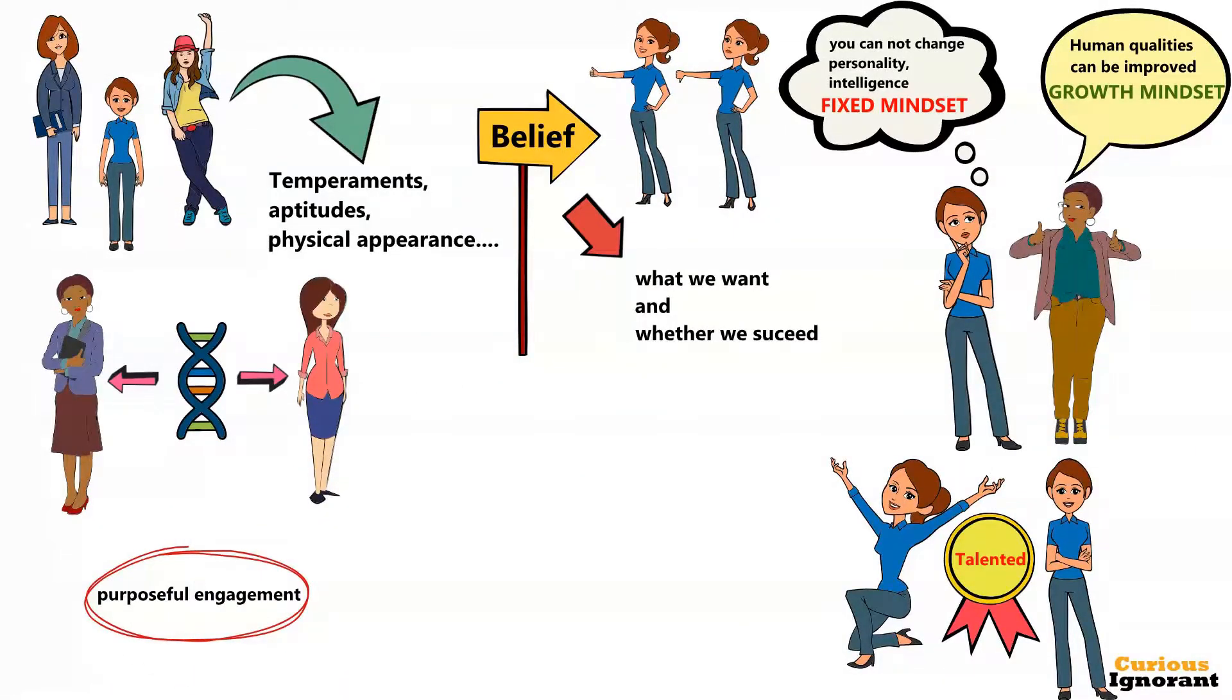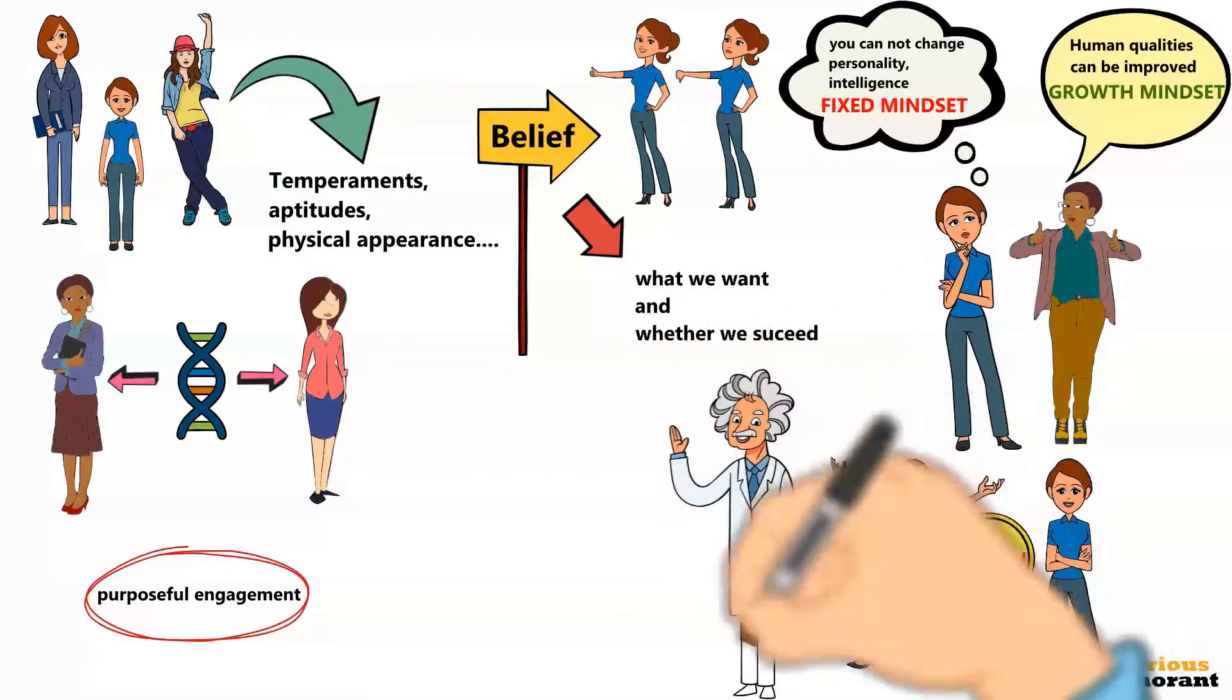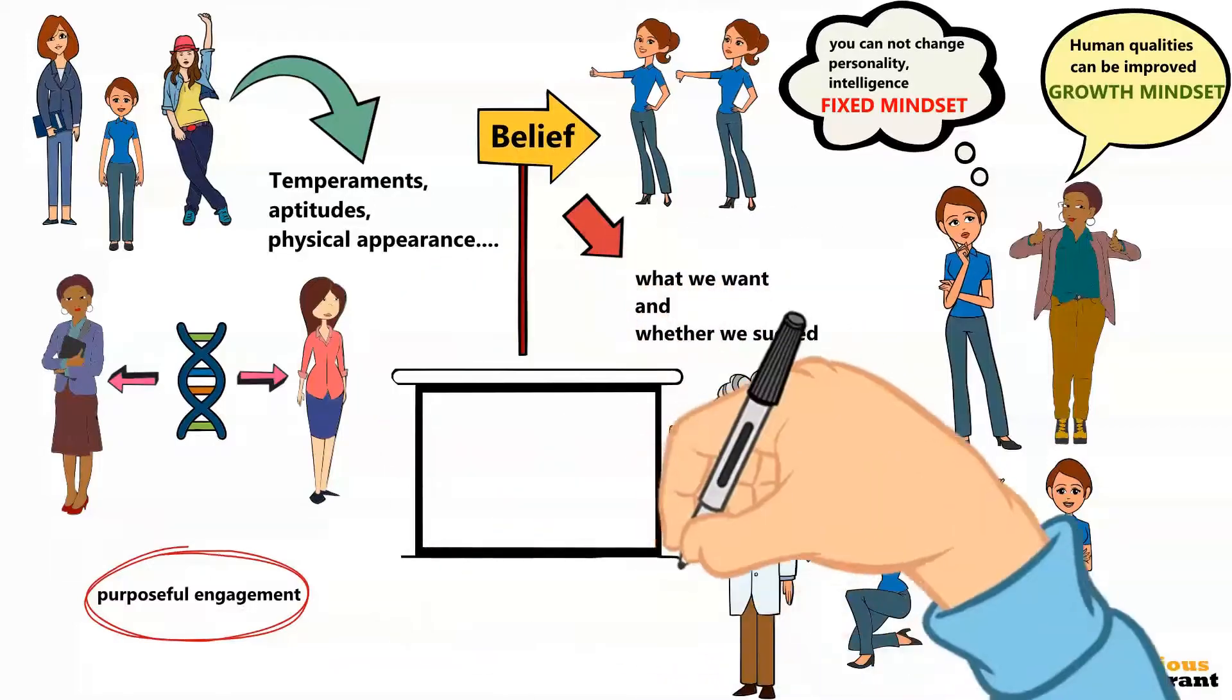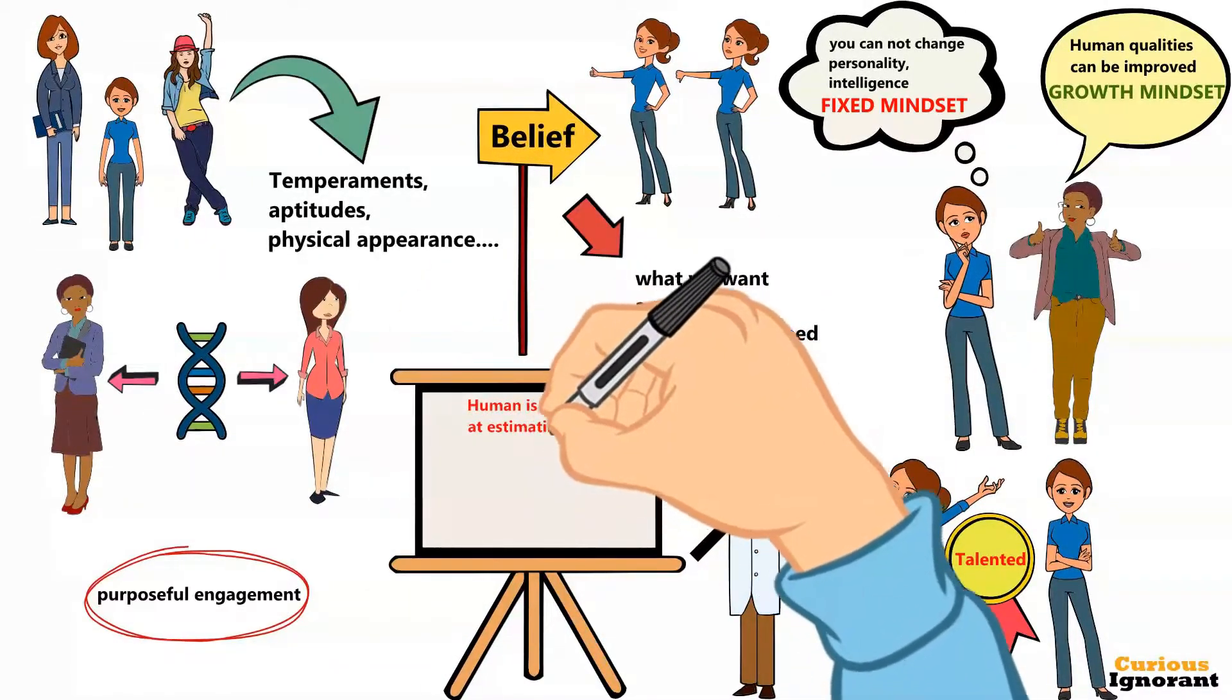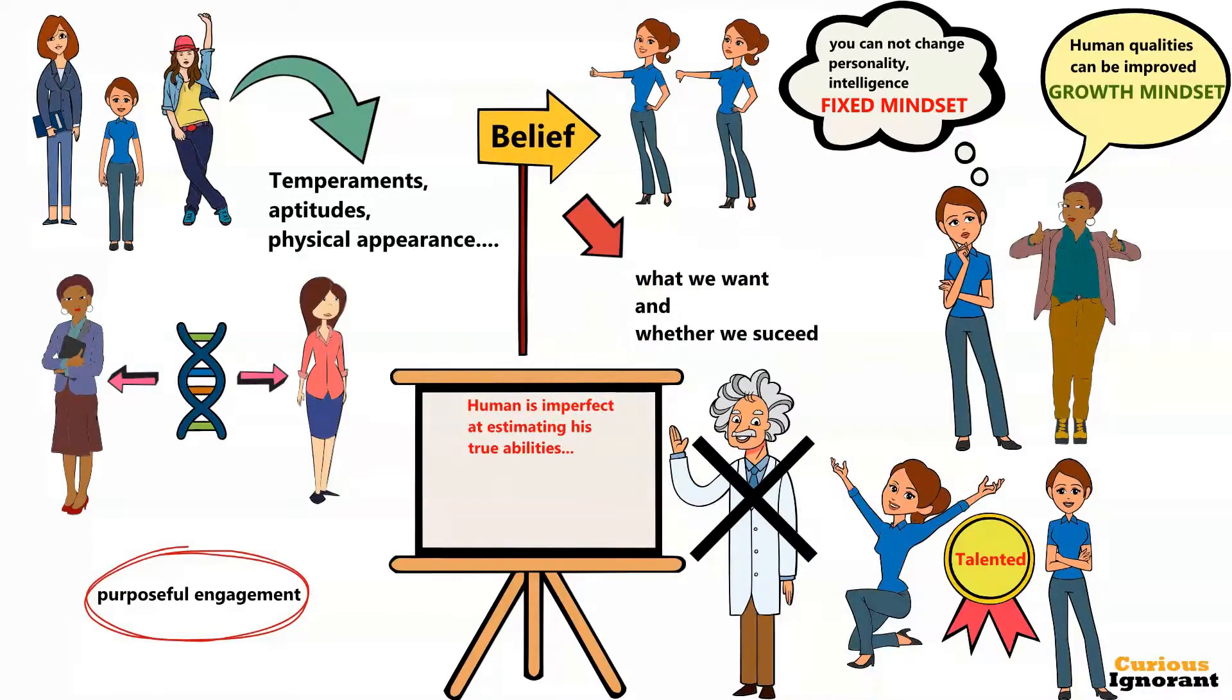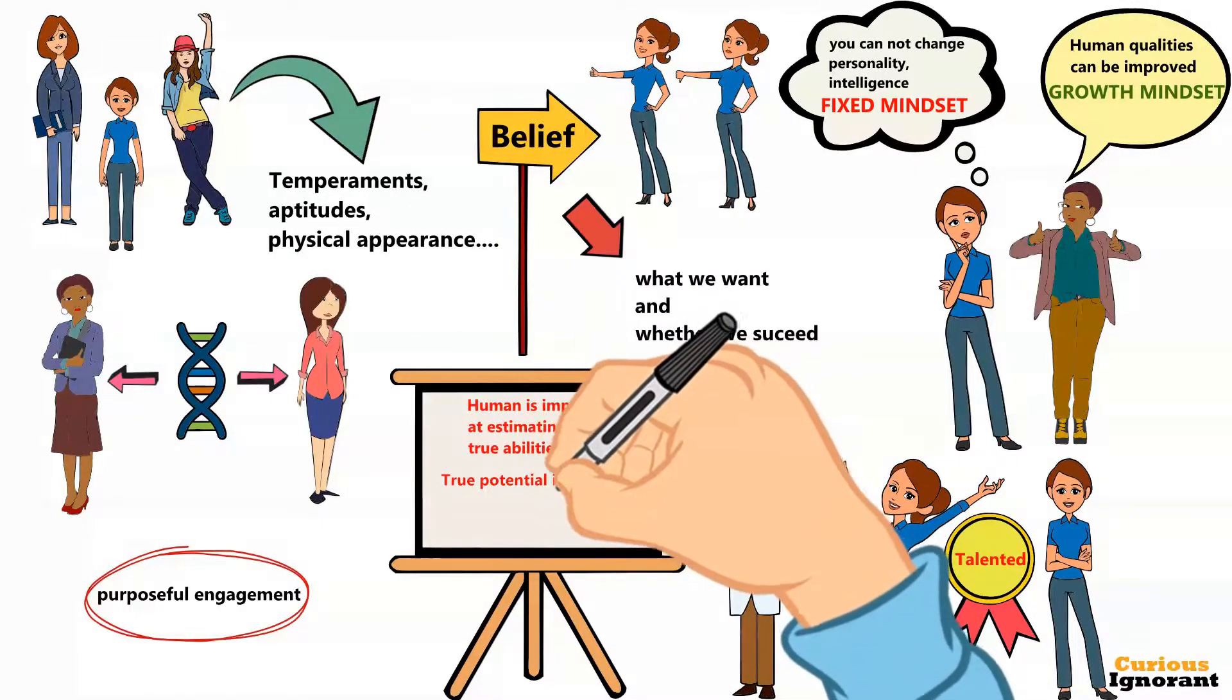Do people with a growth mindset believe that anyone can be anything, that anyone with proper motivation or education can be Einstein or Beethoven? No, but they believe that humans are imperfect at estimating true abilities and performance, so true potential is unknown.